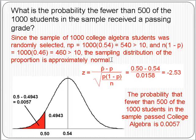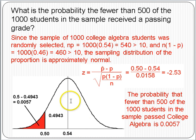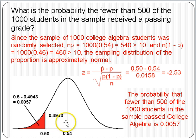I always advocate that you visualize the problem. We have a normal distribution of sample proportions with a mean of 0.54, the same as the proportion of all students that pass College Algebra. We want to find the probability that the sample proportion is 0.50 or less, so we're looking for the left tail region. To determine this probability, we find the z-score: the sample proportion minus its mean of 0.54, over the standard deviation, giving negative 2.53. From the z-table, the probability associated with 2.53 is 0.4943. Since the table gives the area between the mean and the score, we subtract 0.4943 from 0.5 to get 0.0057.